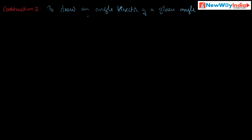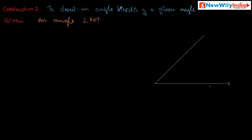This is the given statement. The given data is an angle XOY. Here O is the vertex, OX is a ray, and OY is another ray, so XOY is the given angle. Now what do you have to prove? Draw an angle bisector of the given angle XOY.